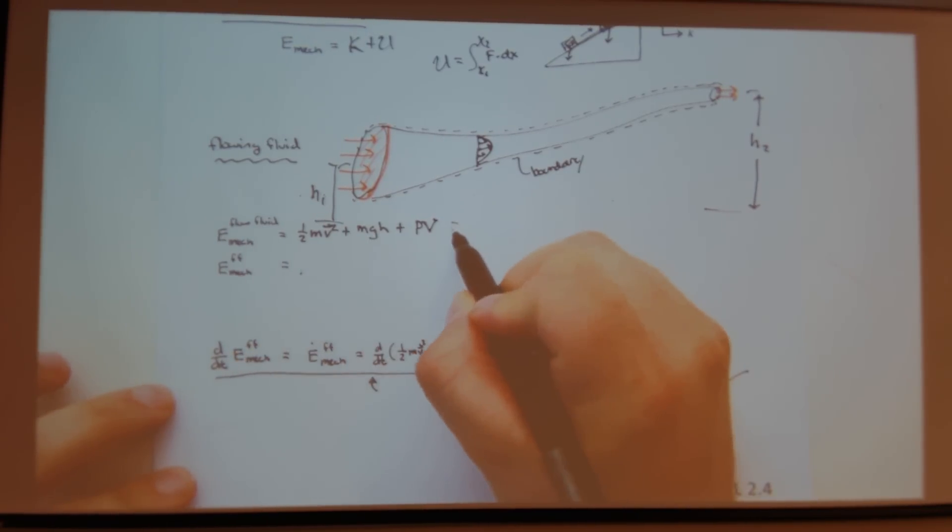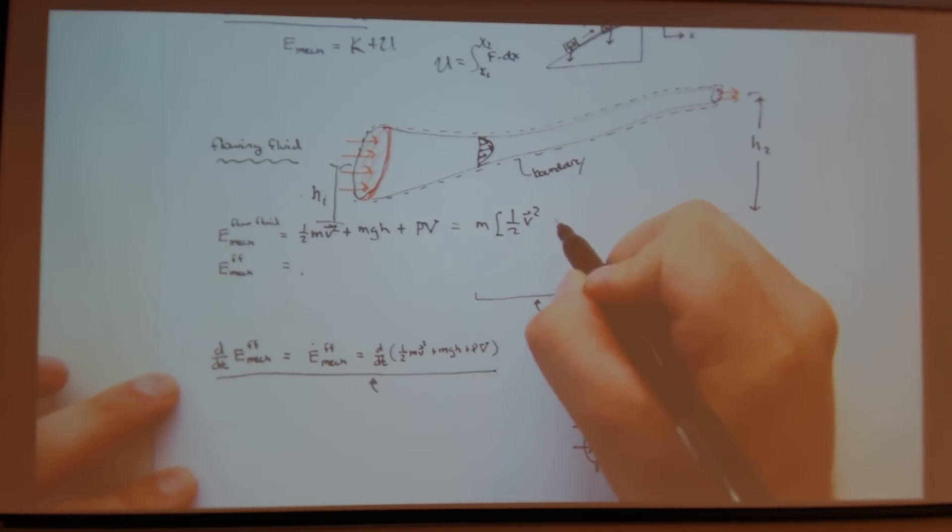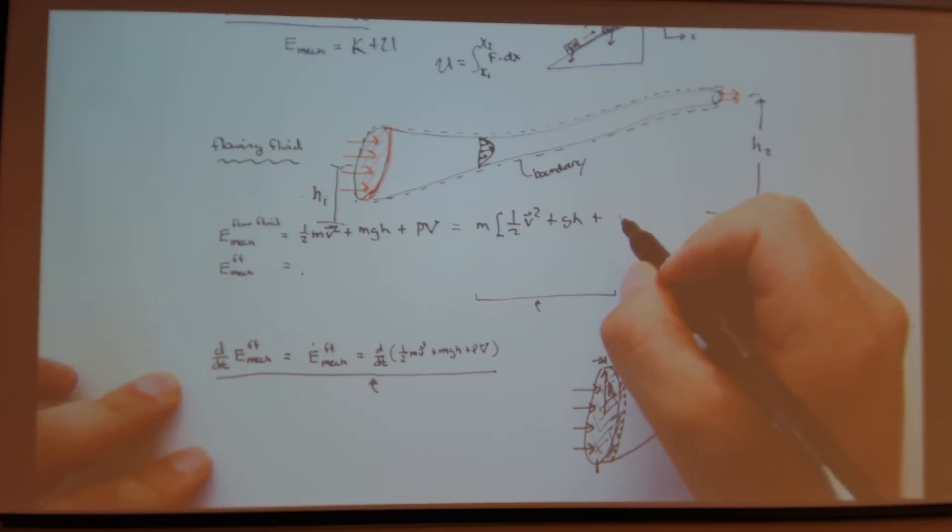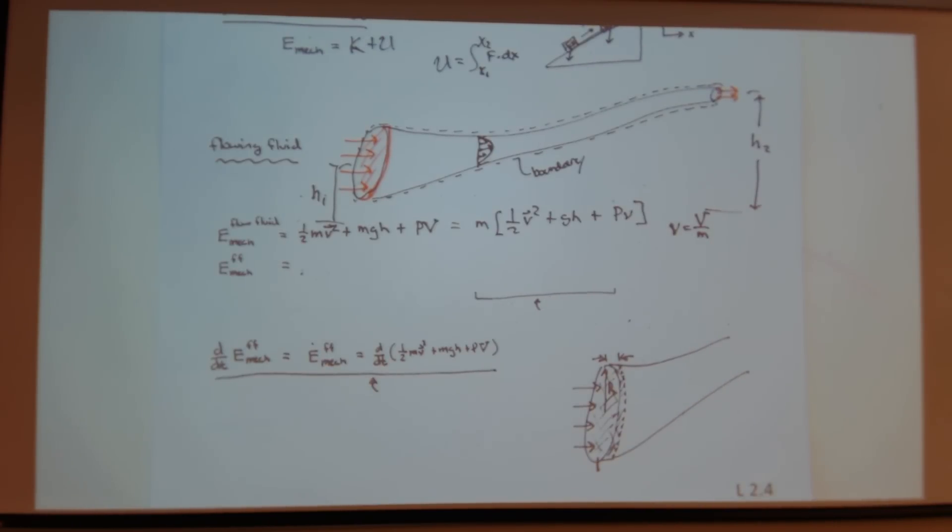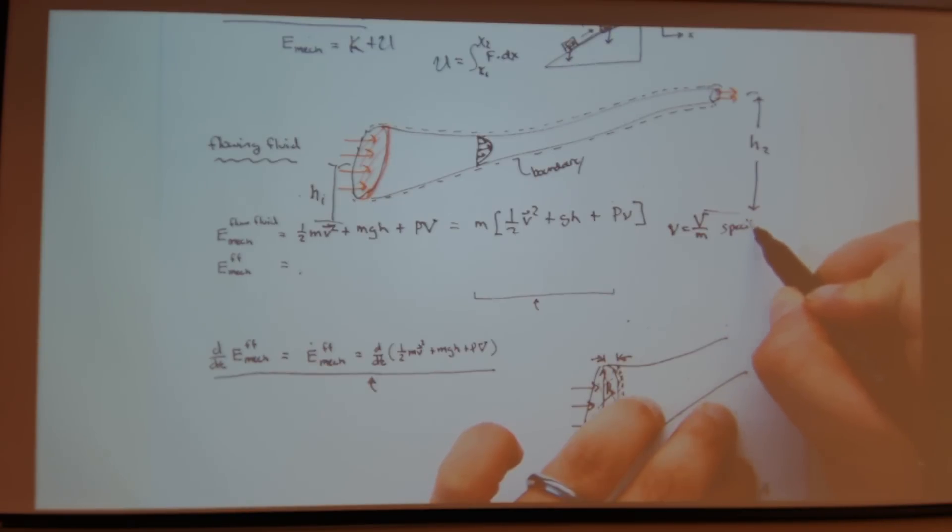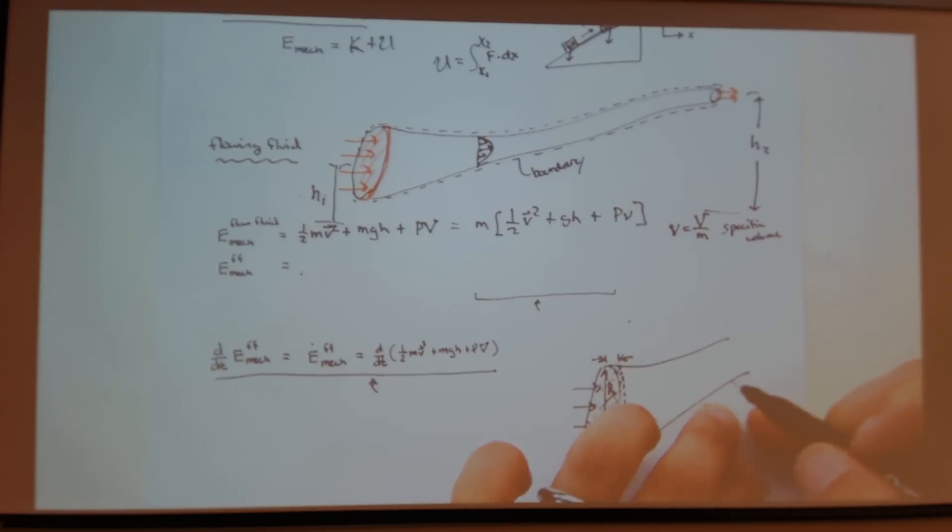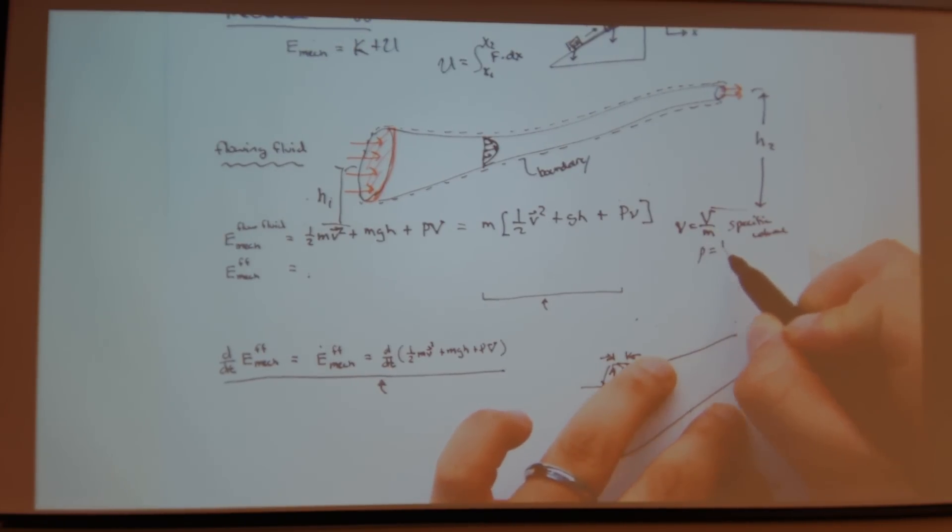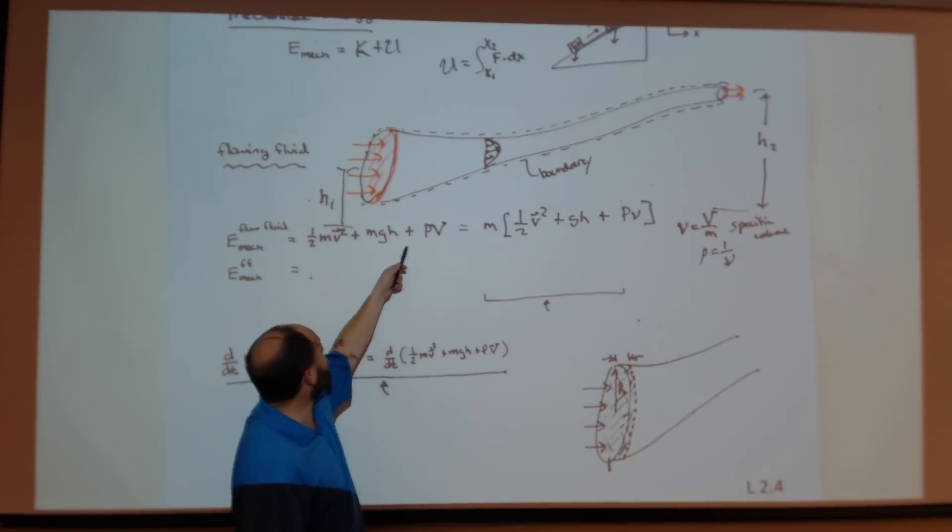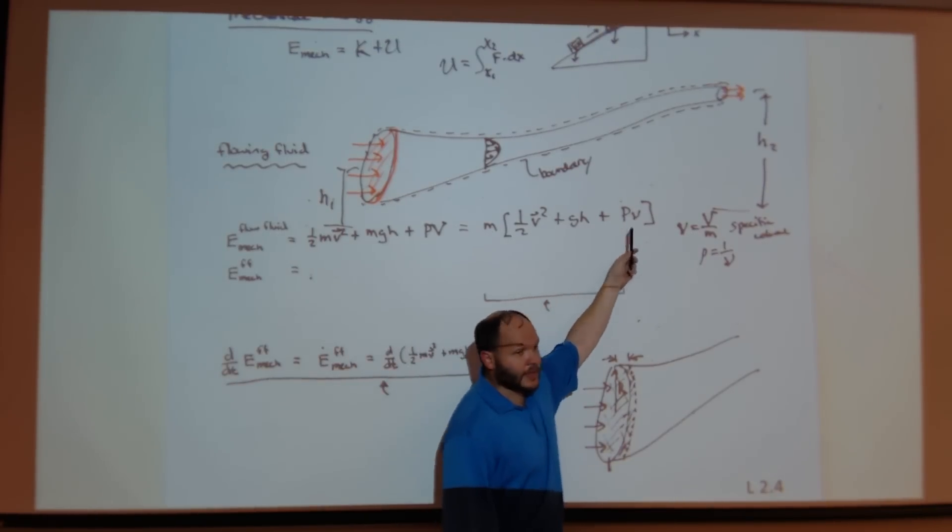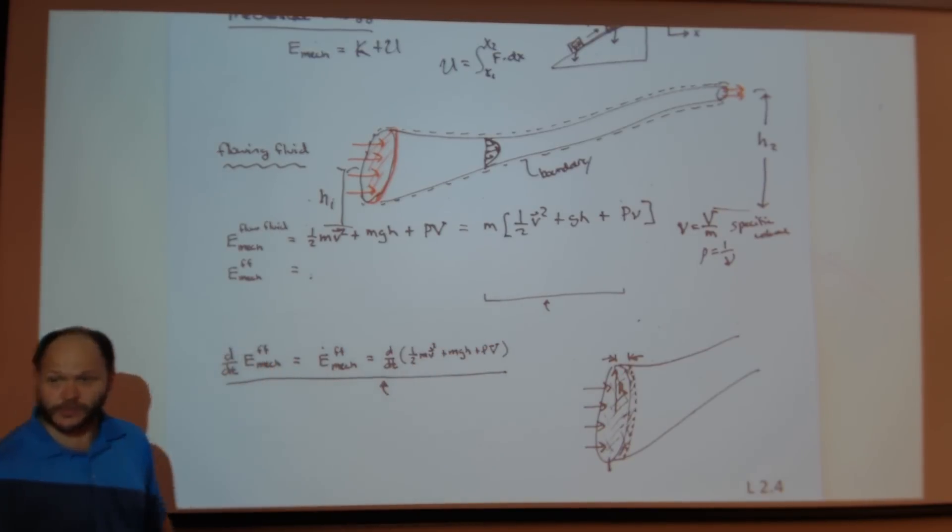Now I can write this a little bit differently. I could do it on a per unit mass basis. So I have one half V squared plus GH plus P over rho. We already talked about the specific volume. Rho equals 1 over the specific volume. So I just took the volume here, divide it by mass. That's equivalent to multiplying the mass out here. And I'm getting that. So this is another form of writing out the mechanical energy associated with fluid flow.